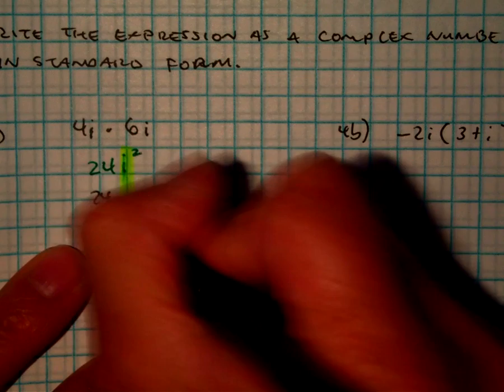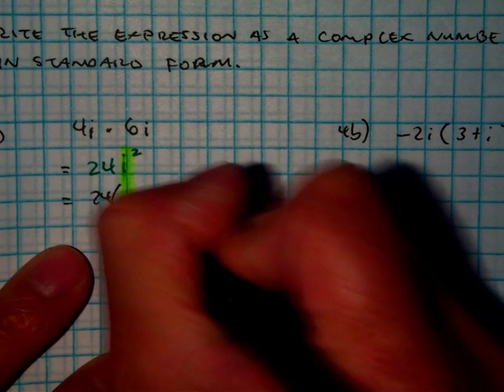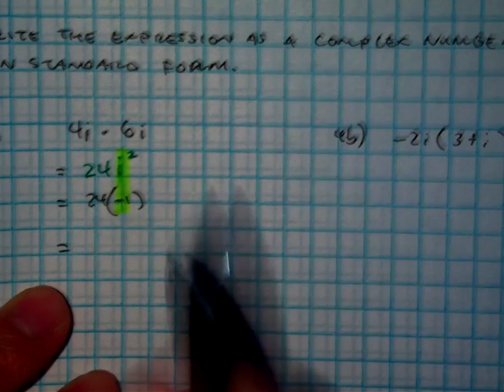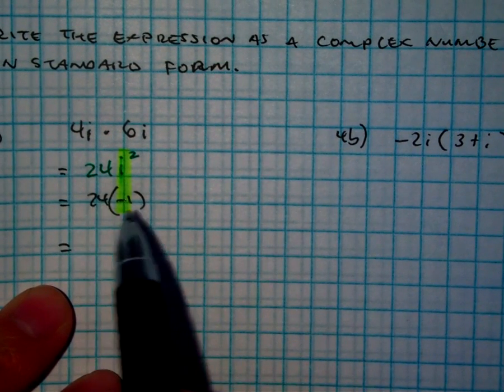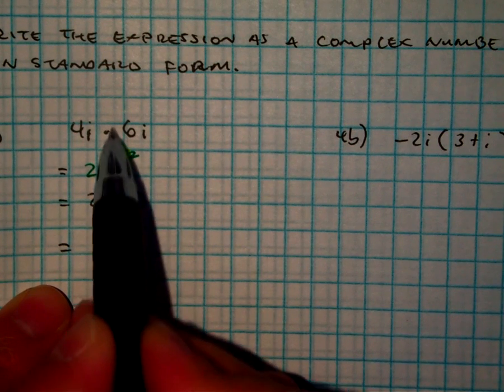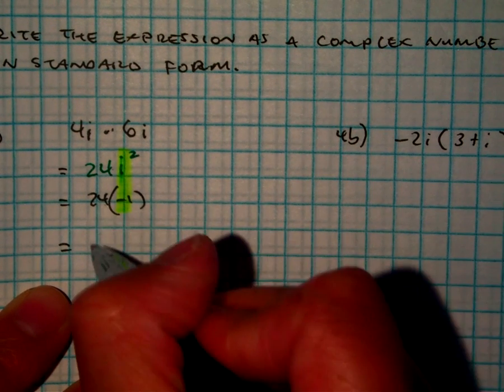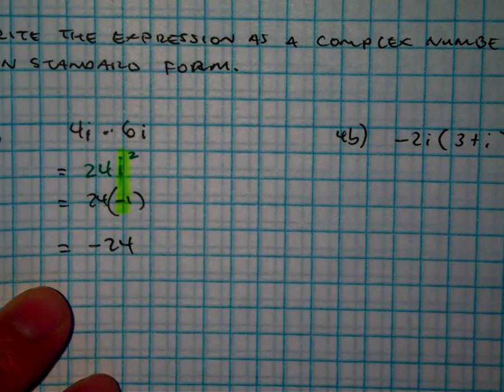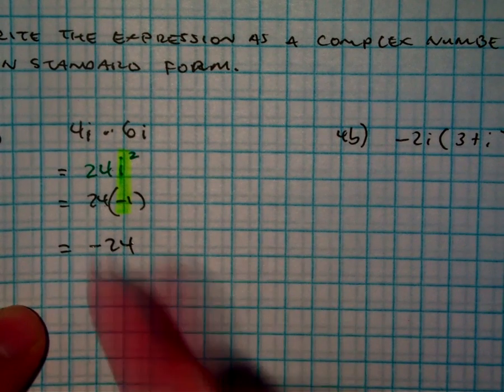So, let's put 24 times negative 1. This does not mean 24 minus 1. Remember, there's multiplication here, here, and here. So, this would be negative 24. Raise your hand if you got that. Awesome.